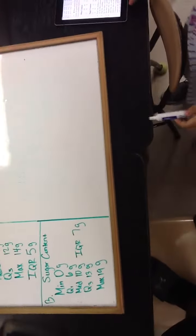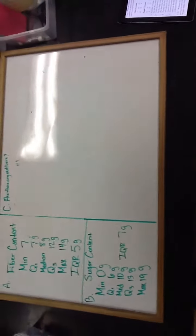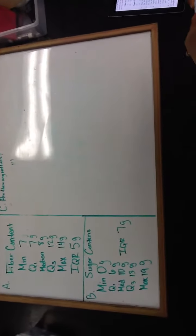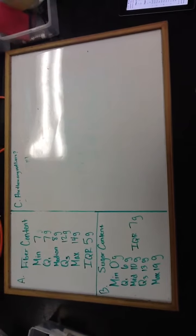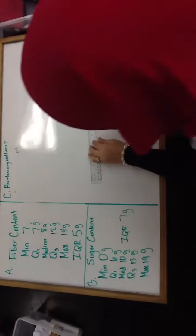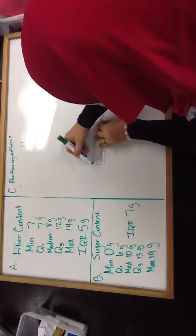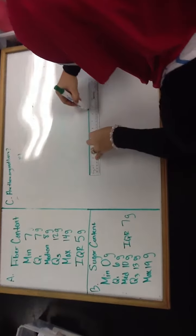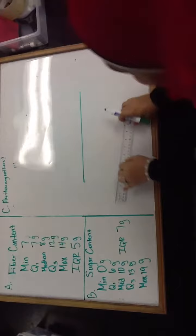E says to construct a comparative box plot and use it to comment on the differences and similarities in the fiber and sugar distributions. So to draw a comparative box plot, you draw your x-axis.